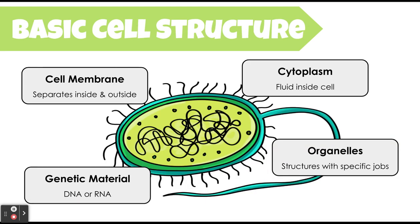Some basic structure: every single cell, no matter what living organism we're talking about, has the same basic structure. First is that there's some form of a cell membrane. The cell membrane is what's going to separate the outside of the cell from the inside. Every type of cell, no matter what type we talk about, will have a membrane separating the inside from the outside.